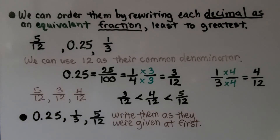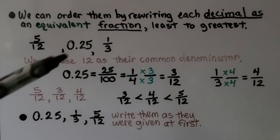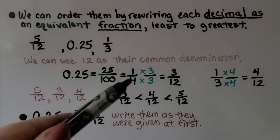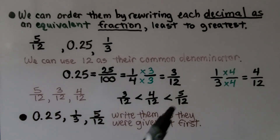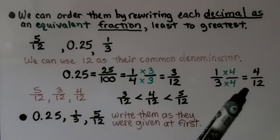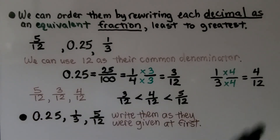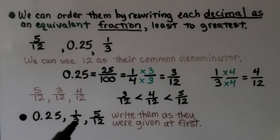We can also order by rewriting each decimal as an equivalent fraction, then finding a common denominator. Given a fraction, a decimal, and a fraction: 0.25 is 25 hundredths, which simplifies to one-fourth. Using 12 as the common denominator — one-fourth becomes three-twelfths, one-third becomes four-twelfths, and five-twelfths stays. Ordering: three-twelfths < four-twelfths < five-twelfths. Written as originally given from least to greatest: 0.25, one-third, five-twelfths.